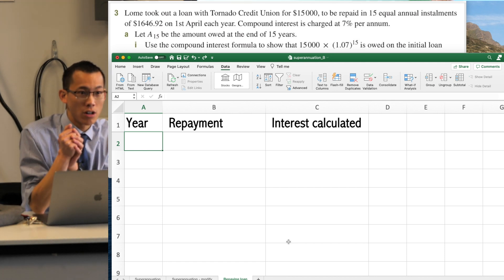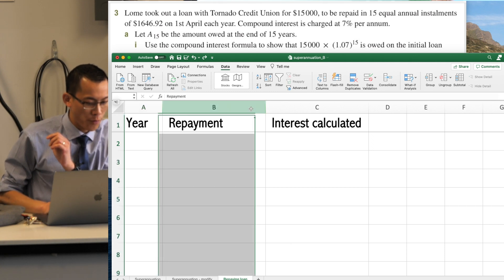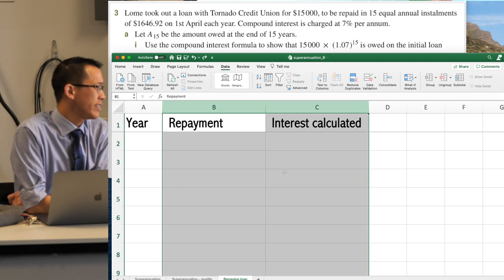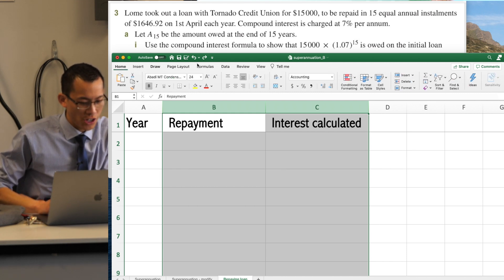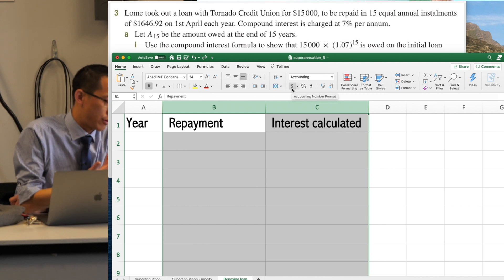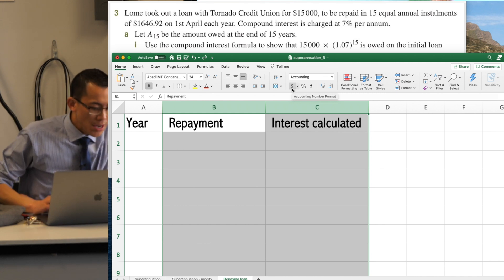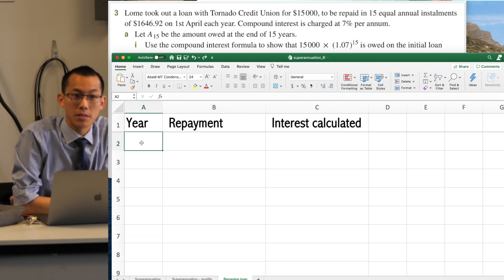So here are our three columns. If you like, just like before, you can take these two columns, which are clearly going to have amounts of money in them, and you can use the dollar sign to format that so that it's a currency. I've already done that for mine. So once you've got your three columns set up, let's start to have a look at this question.